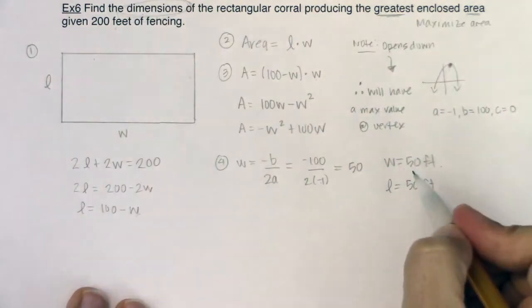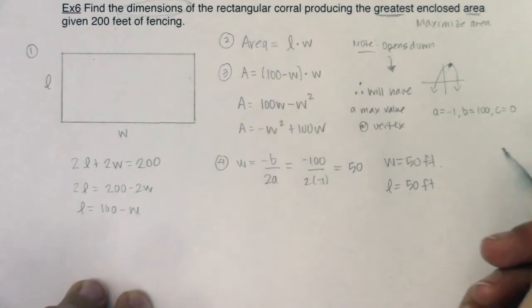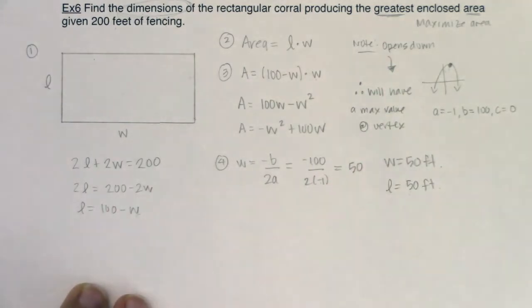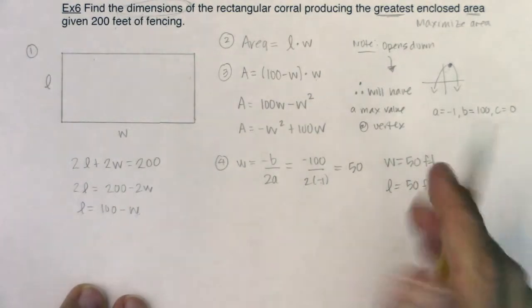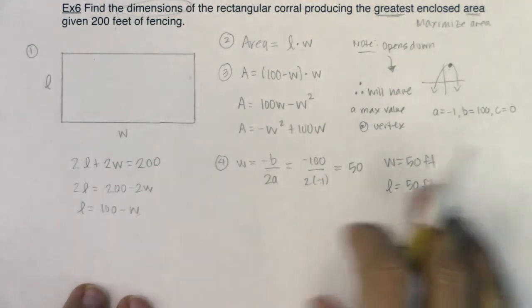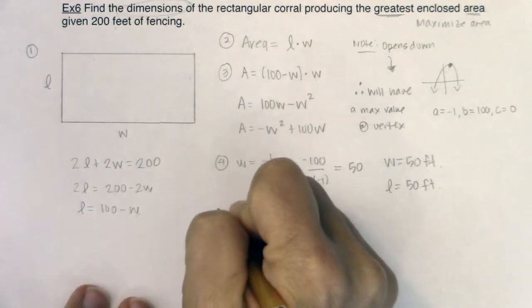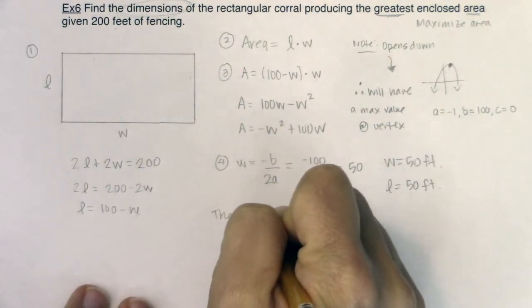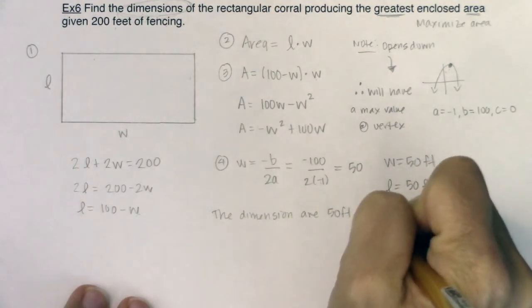So the dimensions are a 50 foot by 50 foot rectangular corral, or technically a square corral. Now if it had asked for the area, I could have done one of two things. I could have multiplied these numbers together to get 2,500 square feet, or I could have plugged 50 into this formula. I'm going to write all of this up because I know it's a lot to just hear out loud. Answering the question asked, we would say the dimensions are 50 feet by 50 feet.